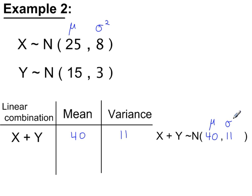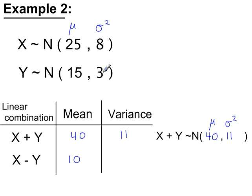The standard deviation of x plus y is the square root of 11. For x minus y, the mean is 25 minus 15, the mean of x minus the mean of y, so the new mean is 10. And since you only ever add variances together, the variance is still 11. So x minus y is normally distributed with a mean of 10 and a variance of 11.